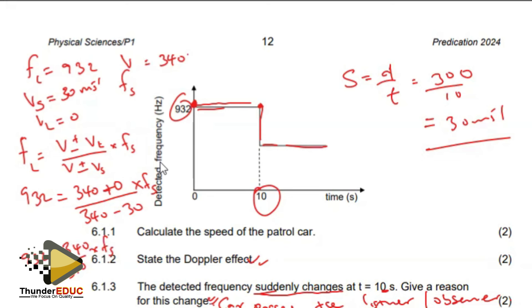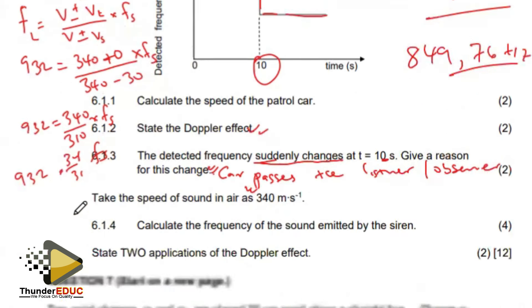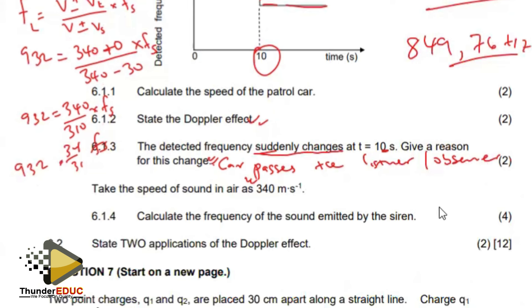340 divided by 310 is giving me a fraction, 34 by 31. fS is equal to 932 and then divide both sides by this thing. So 932 divided by my answer, I'm getting 849.76 hertz. So that is the frequency of the sound, 849.76 hertz.